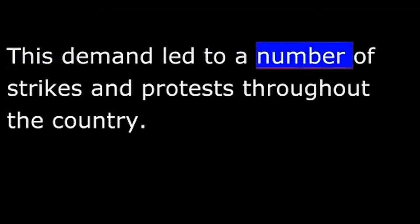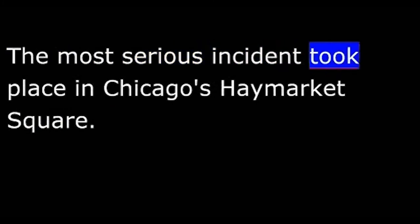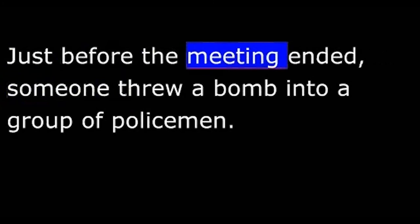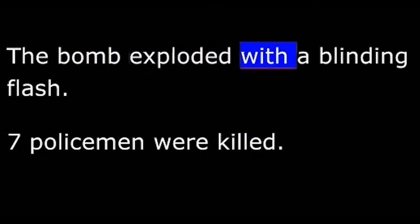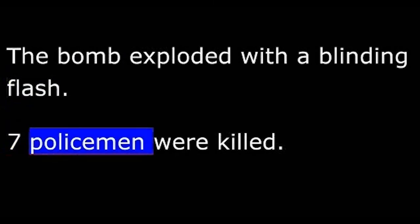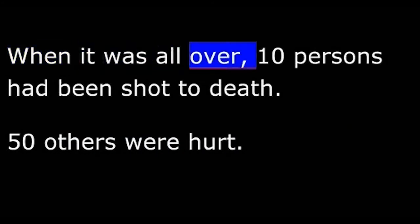This demand led to a number of strikes and protests throughout the country. The most serious incident took place in Chicago's Haymarket Square. More than 1,000 union supporters went to a meeting there, organized by an extremist. They stood calmly and listened to speeches. Just before the meeting ended, someone threw a bomb into a group of policemen. The bomb exploded with a blinding flash. Seven policemen were killed. The other policemen began shooting at the crowd, and some people in the crowd fired back. When it was all over, ten persons had been shot to death and fifty others were hurt.